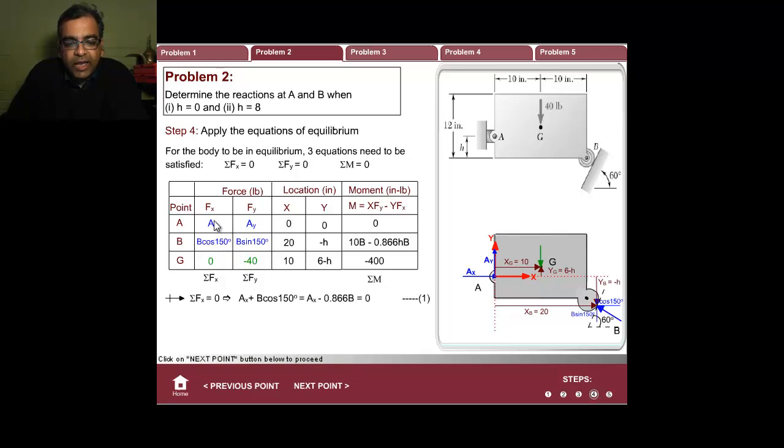If I sum this, I'll get Ax plus B cos 150 plus 0 equal to 0, so that's Ax minus 0.866B equal to 0. Next, Ay plus B sin 150 minus 40 is the same as Ay plus 0.5B minus 40 equal to 0. That's the second equation. The last one is 10B minus 0.866hB minus 400 equal to 0, and this is counterclockwise moment.